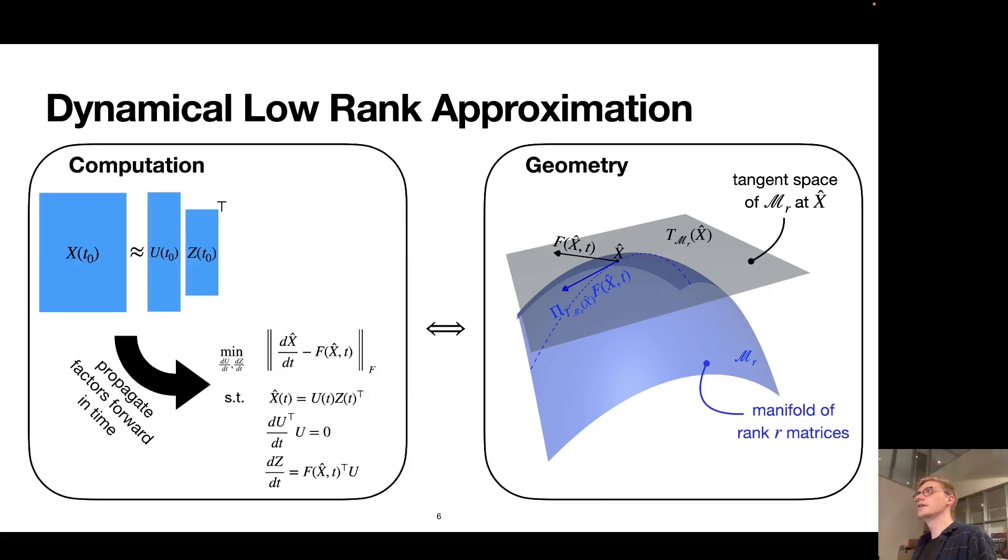Computationally, this is done by starting with some low rank factorization of the initial data and then propagating the factors forward in time. In some ways that is very much like standard numerical integration, but in other ways it's actually very different. In particular, for this to not only be memory but also computationally efficient, it is actually imperative to take advantage of the low-rank structure of the input whenever we evaluate the dynamics F here and its projection onto the tangent space. As a consequence, at least to the best of my knowledge, there exists no general purpose software out there for using dynamical low rank approximation, and instead all implementations are kind of handcrafted and tailored to a given application to take advantage of these structures.